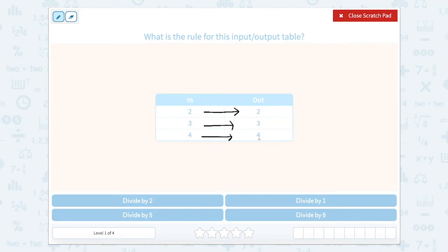So if we have 2 we're dividing by 1 to get 2. If we have 3 and we divide by 1 we get 3. And if we have 4 and divide by 1 we get 4. So our rule is to divide by 1.